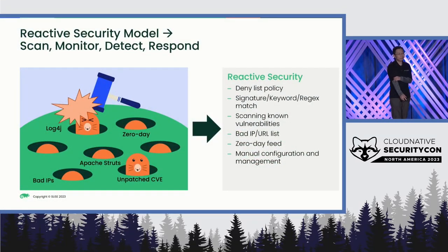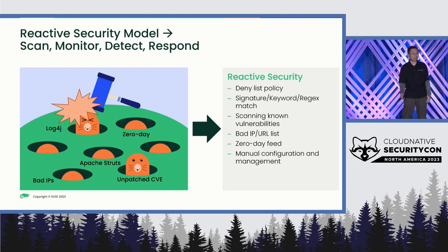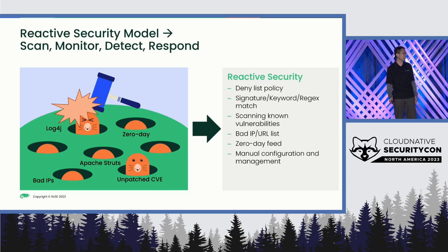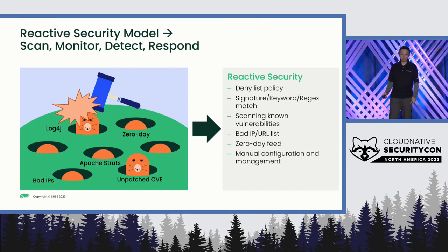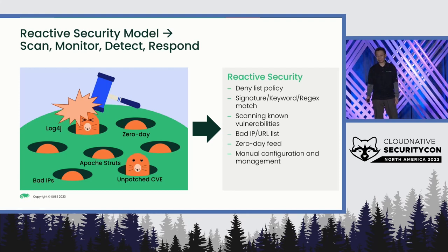Let's use the famous log4j vulnerability as an example. I think everybody knows that. The log4j CVE was discovered in November 2021. Only one week after that, a real-world exploit attempt was reported.